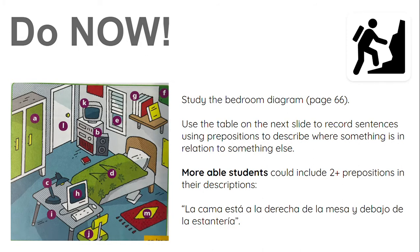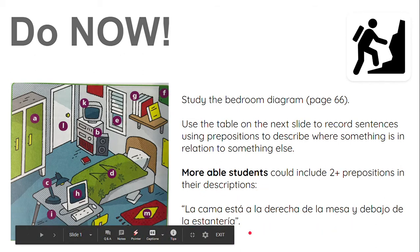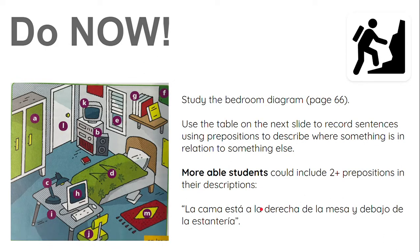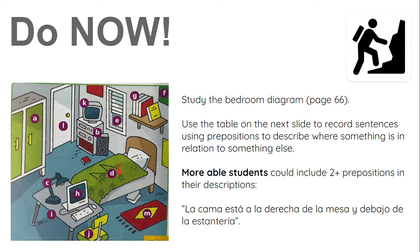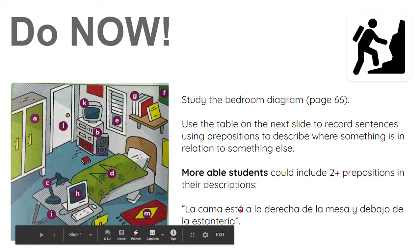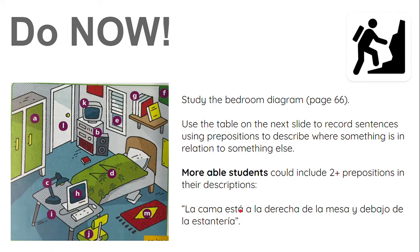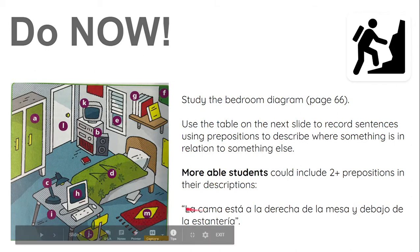So let me show you an example. I have a sentence written down here — it's quite long. Let's break it down bit by bit and talk you through how I created this sentence. The first thing we have is la cama — that's the bed. Well, here's the bed. Then I have the word está. We know from our lesson last week that está means 'it is' in the context of where something is. So la cama está — the bed is. A la derecha de — to the right of. That's the preposition. La mesa — the table.